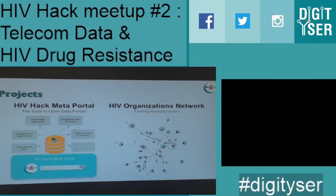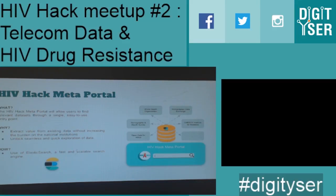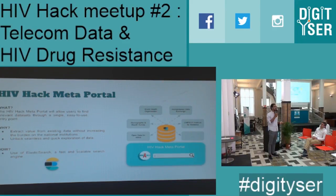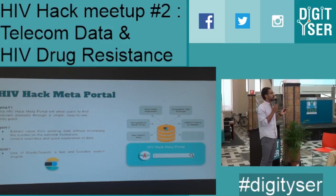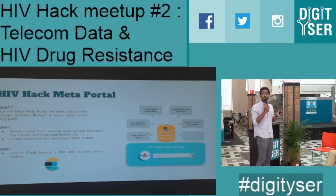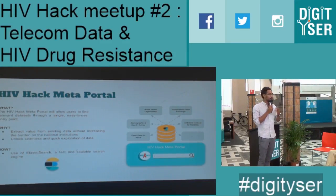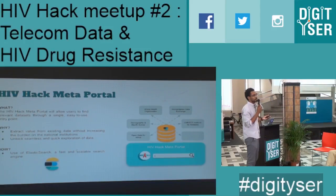These are two projects we initiated for the hackathon: the HIV Hack Meta Portal and an HIV Organizations Network. For the first one, the goal is to allow hackathon participants to explore new ideas quickly. If we ask people to switch between eight portals, learn the APIs, and check everywhere for the data they need, they're not going to get very far. We really want one single entry point where people can check quickly if they have access to a given dataset — if it exists they download it, if not they move to the next idea — enabling quick prototyping and better solutions at the end.